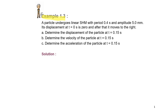Example 1.3. A particle undergoes linear simple harmonic motion with a period of 0.4 seconds and an amplitude of 5 mm. Its displacement at t equals 0 is 0, and after that it moves to the right. We need to determine: (1) the displacement at t = 0.15 s, (2) the velocity at t = 0.15 s, and (3) the acceleration at t = 0.15 s.